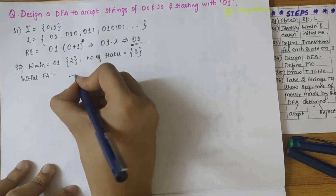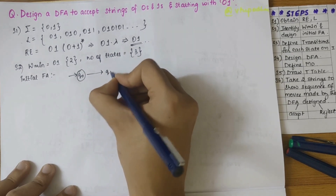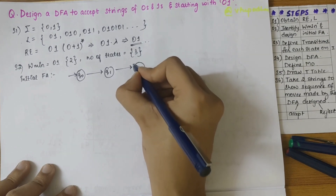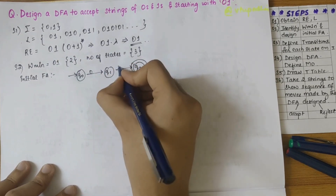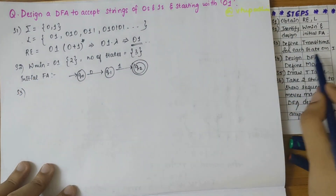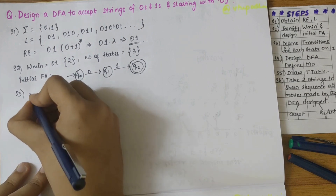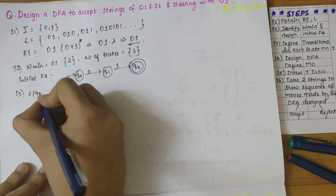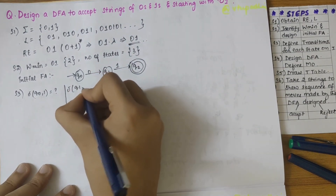Now let's design the initial finite automata comprising of three states: first is q0 — the start state — followed by q1, then q2 — the final state — with transitions on 0 and 1. Step three is to define transitions for each state on sigma. We have to define transitions for all states: q0 on 0 is defined, but q0 on 1 is unknown.